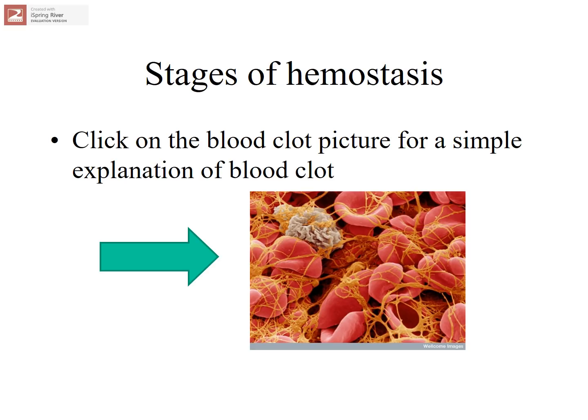The picture on this slide represents an electron photomicrograph of a blood clot. The fibrin appears as a silly string-looking structure, which is the end of the clotting process. It pulls together red cells, white cells, and platelets to form that gelatinous fibrin mass, which forms a blood clot and allows both bleeding to stop and healing to occur. Pause the playback and click on the picture to view a short video explaining the process of blood clotting.